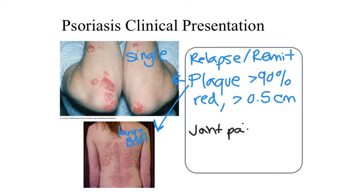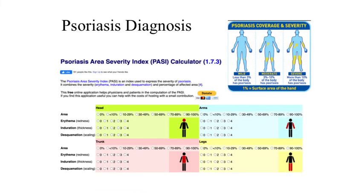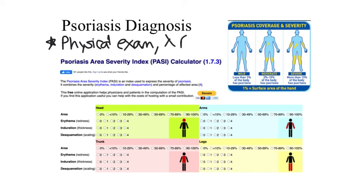Other presentations of psoriasis include psoriatic arthritis, which results in joint pain — affecting about 5 to 50% of individuals with psoriasis. Individuals may also notice severe dandruff and flaking of the scalp, as well as nail changes. Diagnosis involves a physical exam to look for the characteristic lesions of psoriasis, and in the case of joint pain, an x-ray may be warranted to determine whether an inflammatory reaction is occurring in the joint space.